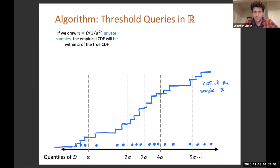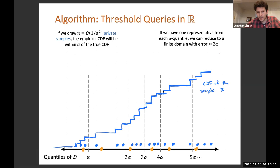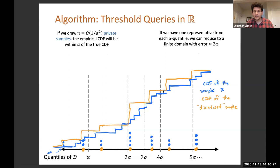Unfortunately, since this is an infinite domain, we actually can't privately approximate this blue CDF using only these private samples. Let's suppose that we chop the real line up into alpha quantiles. The leftmost interval represents the first alpha quantile, the next one is the 2-alpha quantile, the next one is the 3-alpha quantile, and so on. Suppose we had one representative point from each alpha quantile. These are the orange points that I drew.